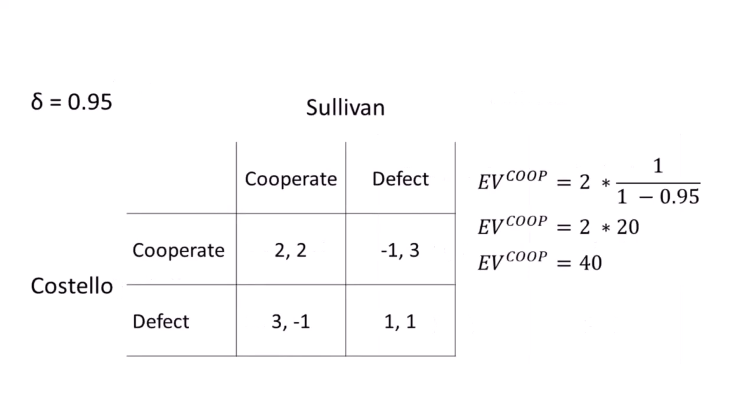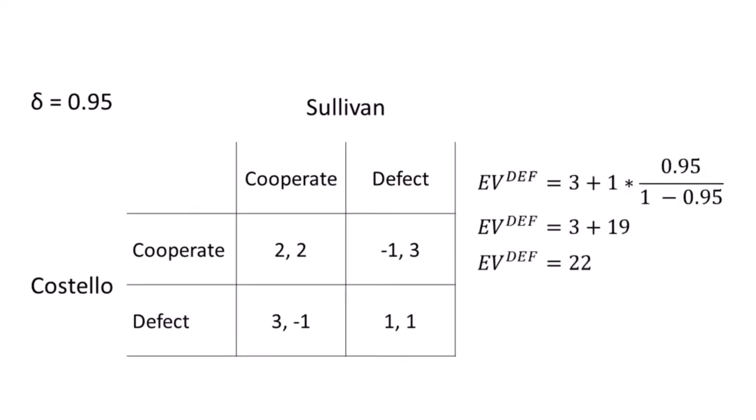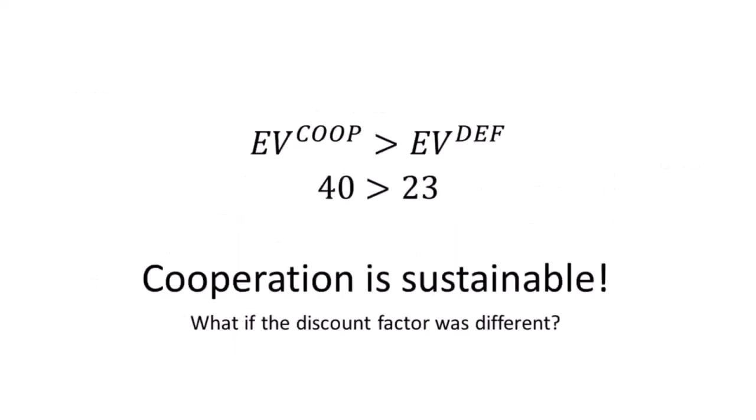On the right we can see the expected value of cooperation. We have our cooperation payoff of 2 and the future payments — multiplying everything together, we get an expected value of 40. On the other hand, defection yields a lower expected value. It's not worth it for Costello to betray Sullivan to gain the extra payoff, and vice versa. So cooperation is sustainable.